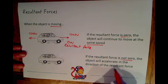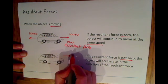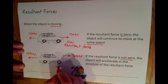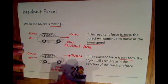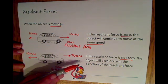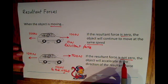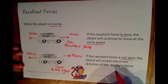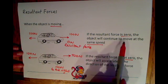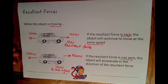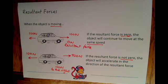On the other hand, if the resultant force is not zero, the object will accelerate in the direction of the resultant force. For example, if you had 200 newtons in one direction and 100 newtons in the other, you would have a resultant force of 100 newtons to the right, and therefore the car would accelerate to the right. In both the stationary and moving cases, a non-zero resultant force results in acceleration. The key thing to watch is whether the object is already moving when the resultant force is zero.